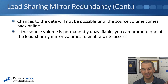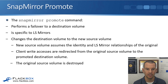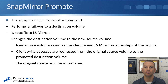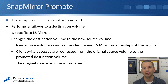Changes to the data will not be possible when the source volume is down, because it is the one writable copy. If the source volume is permanently unavailable, you can promote one of the load-sharing mirror volumes to enable write access. When you do a promote, the destination volume becomes the new source volume and the new writable copy. This uses the snap-mirror-promote command, which performs a failover of the source read-write volume to a destination volume. It's specific to load-sharing mirrors. The snap-mirror-replication relationships are re-established automatically when you use the snap-mirror-promote command.